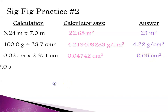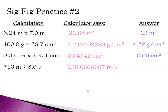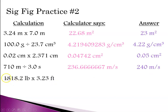Here we have 2 sig figs versus 2 sig figs. The calculator gives a lot of digits, but counting 2 sig figs from the left gives us the 3, so the answer is 240. In the next problem, we have 5 sig figs versus 3. The calculator gives many digits, but we round to 3 sig figs. The last significant digit is the 7, so the answer is 5,870.